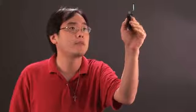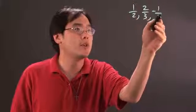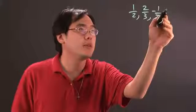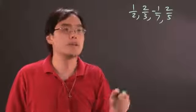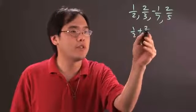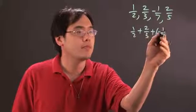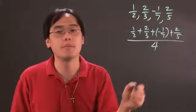So for example, if you have one-half, two-thirds, negative one-seventh, I'll just put a negative just for good measure, and two-fifths, what you need to do is you need to add all four of these fractions together and then divide by the total number of fractions that there are, which is going to be four.